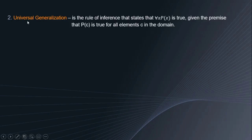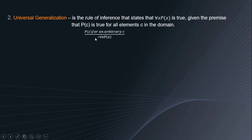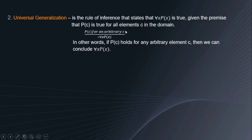Next, we have universal generalization. When we say universal generalization, it is the rule of inference that states that for all x, P(x) is true, given the premise that P(c) is true for all elements c in the domain. This is how it looks like: P(c) for an arbitrary c is true; therefore, for all x, P(x) has also to be true. In other words, if P(c) holds for any arbitrary element c, then we can conclude for all x, P(x).